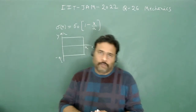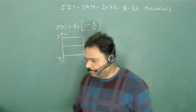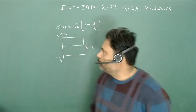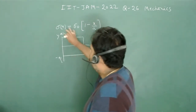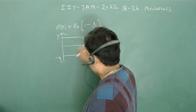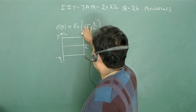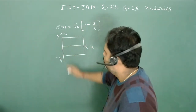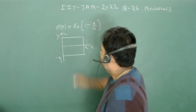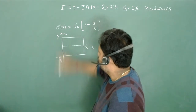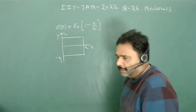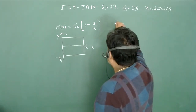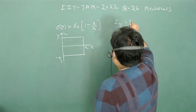Hello students, let's solve one more problem from IIT JAM 2022. This problem is from mechanics, mainly from moment of inertia. The mass density of a square sheet is given as σ = σ₀(1 - x/a). The square sheet is positioned at the y-axis, symmetric about the x-axis from -a/2 to +a/2. We have to calculate the moment of inertia I_yy.